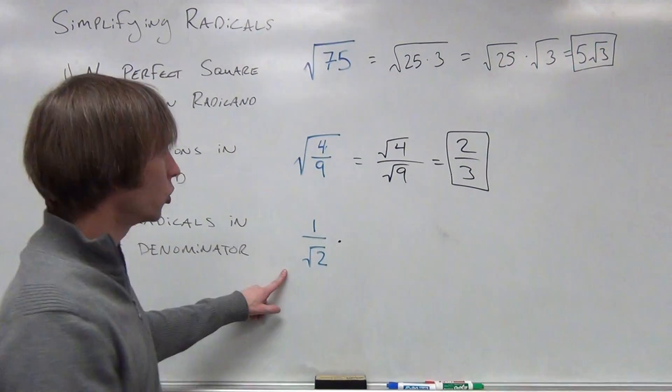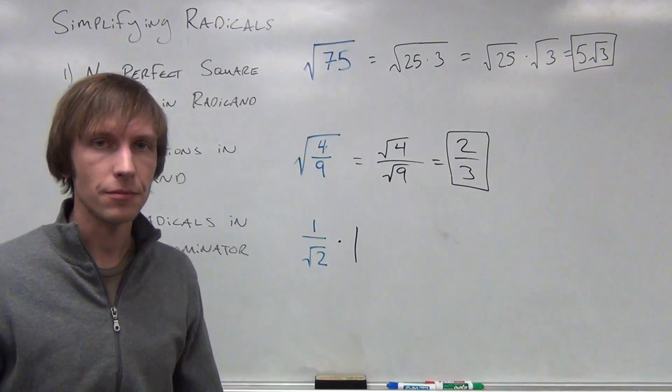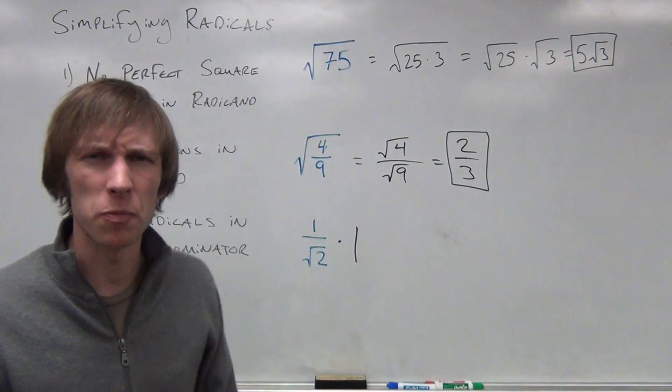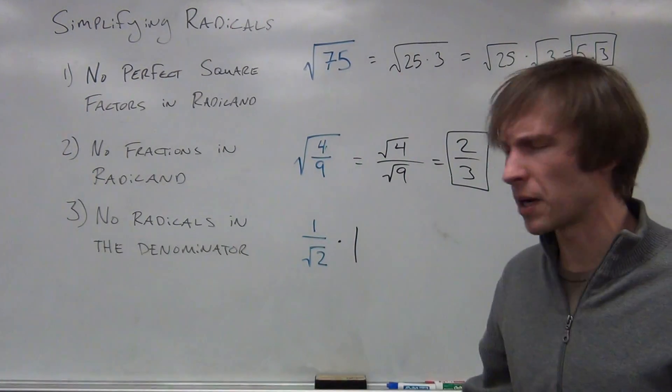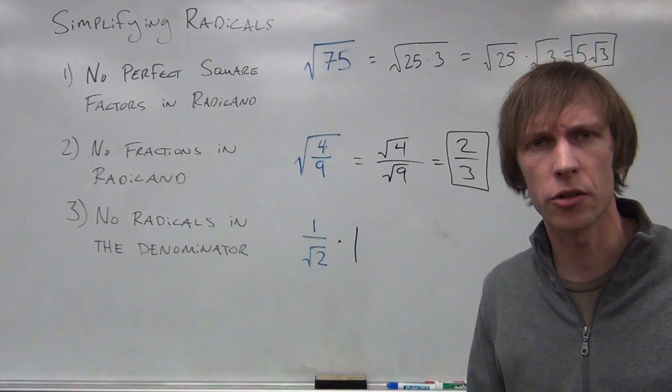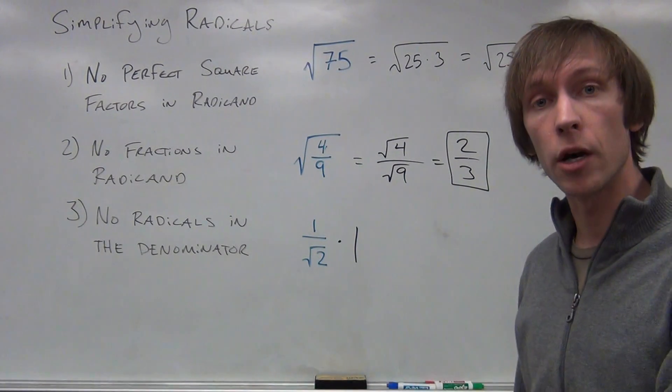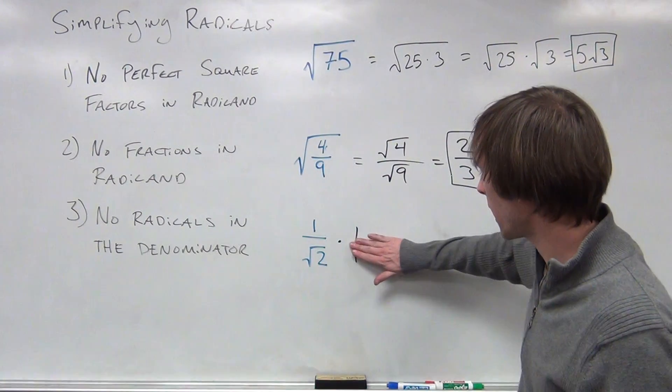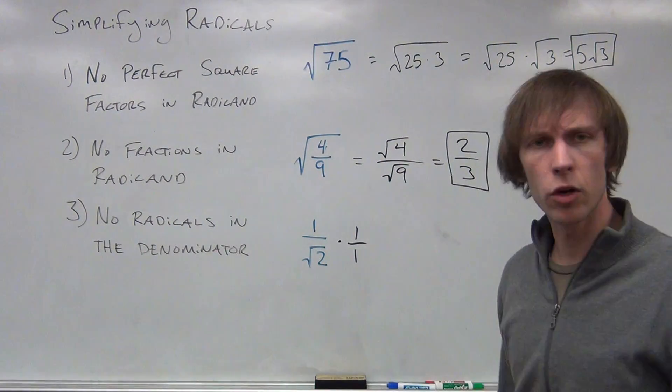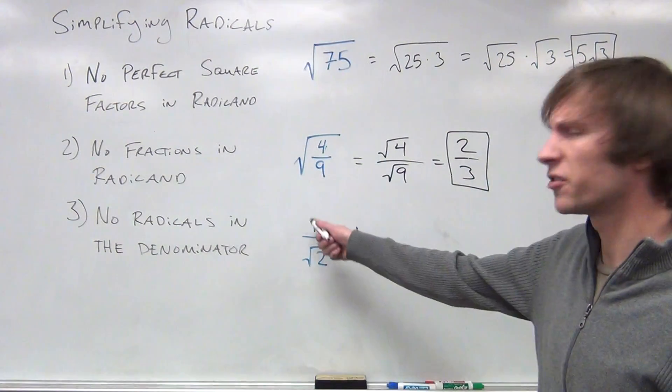1 over the square root of 2 times 1. Well, that's a little ridiculous. Multiplying by 1 doesn't change its value. All right, so multiplying by 1, I'm just going to get 1 over the square root of 2. Maybe there's another way that I can write the number 1. What if I wrote it as 1 over 1?